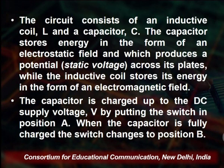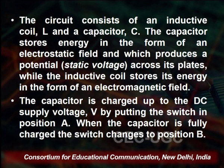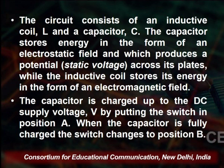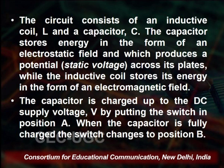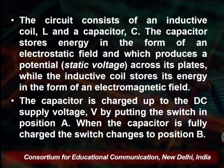The circuit consists of the inductive coil represented by L and the capacitor represented by C. The capacitor stores energy in the form of the electrostatic field, producing a potential — that is, a static voltage across its plates — while the inductive coil stores energy in the form of the electromagnetic field.